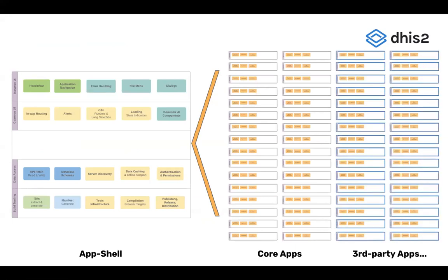The things that make an app actually unique and specific to a use case are a very small portion of all the things you need to think about when building it. So we've extracted the common things into what we call an App Shell — a common wrapper provided by the application platform that is standard across all apps in a system. This makes the amount you need to develop much, much smaller, easier to maintain, and more consistent across different applications.